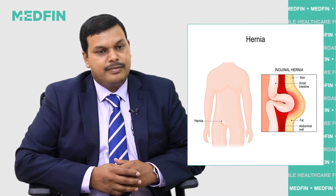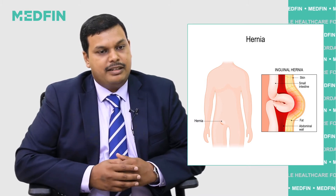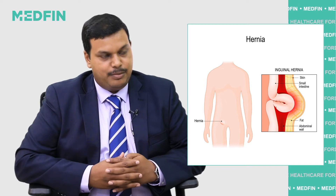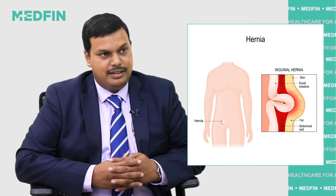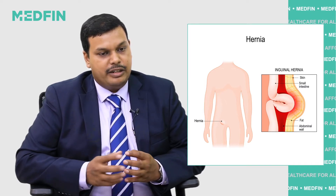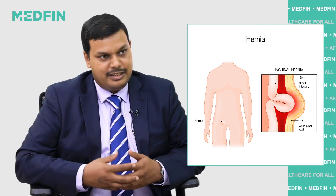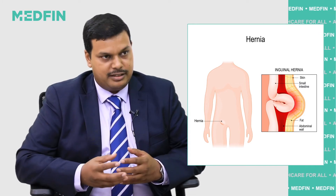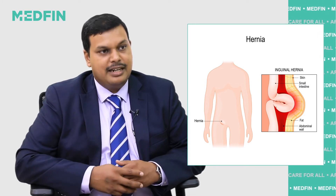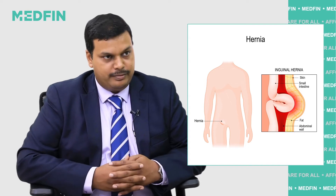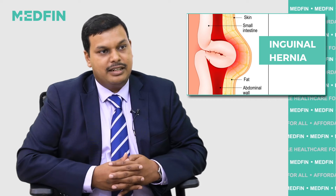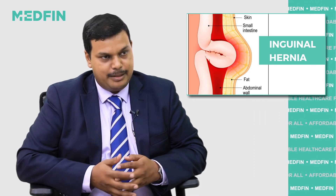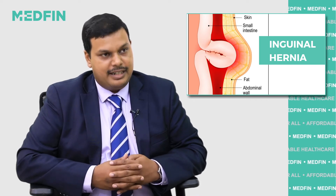In inguinal hernia, there is something called the inguinal canal, wherein the intestine or fat inside the abdomen may push through along with the regular structures that come through it and may come out into the open. This is called inguinal hernia. They are of two types: indirect type and direct type.